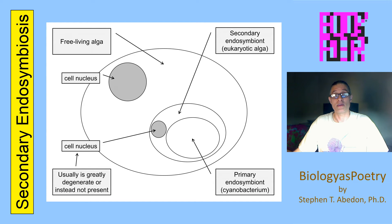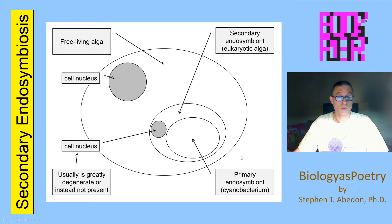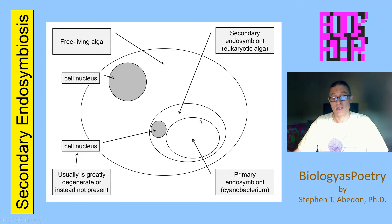The former eukaryotic algae that has been acquired as a plastid tends to degenerate, such that especially the nucleus associated with the plastid is lost. But the original situation, upon the acquisition of the eukaryotic cell as a plastid, is that you end up with a cyanobacterium — which would be the chloroplast of the smaller of the algae — its nucleus, the nucleus associated with that algae, which in turn is found within the cytoplasm of the larger eukaryotic cell.